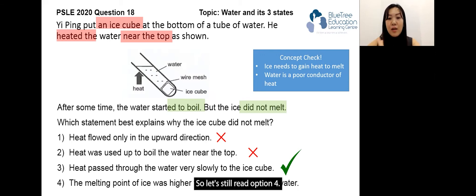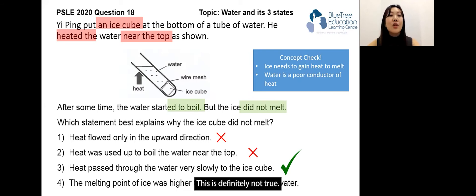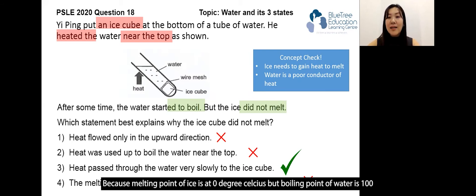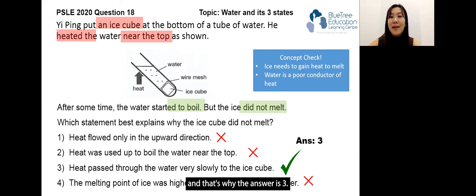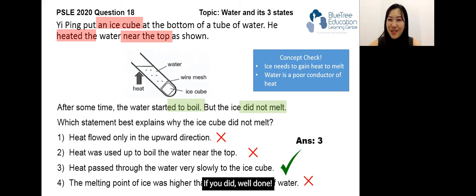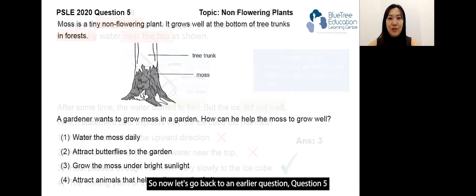Let's still read option four: the melting point of ice was higher than the boiling point of water. This is definitely not true because the melting point of ice is zero degrees Celsius, but the boiling point is 100. The melting point is lower than the boiling point, and that's why the answer is three. Did you get this correct? Well done if you did! Now let's go back to question five.